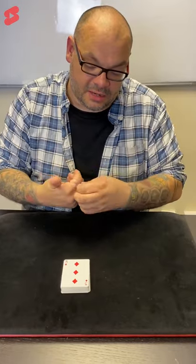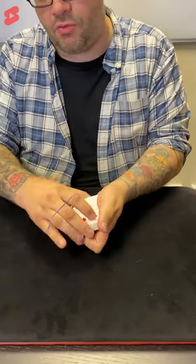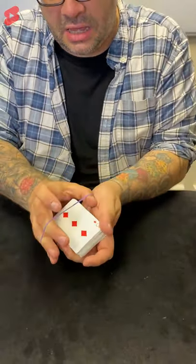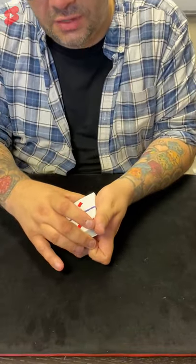But here's what I'm going to do. You see this elastic band? Yep. I'm going to wrap the elastic band around the deck like this, okay? Just like that, sleight of hand-proofing the deck.